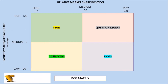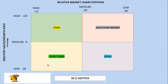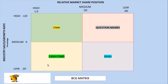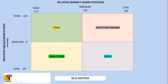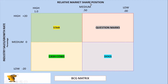Next we have the BCG matrix. BCG stands for Boston Consulting Group, which was founded in 1963. It was a pioneering consulting firm that introduced influential concepts such as the experience curve and the growth-share matrix. In the BCG approach, each of the firm's strategic business units is plotted on a two-dimensional grid where the axes are relative market share and industry growth rate.